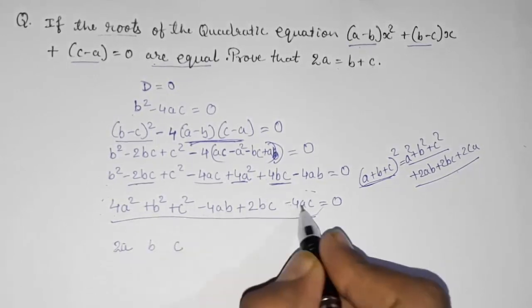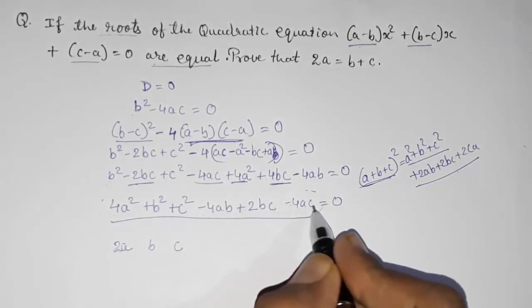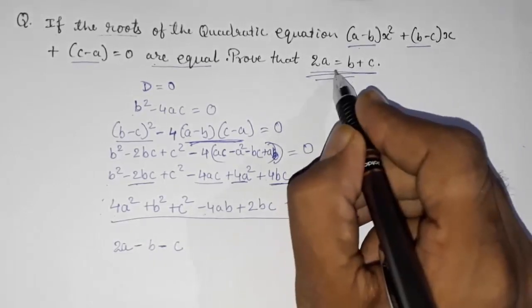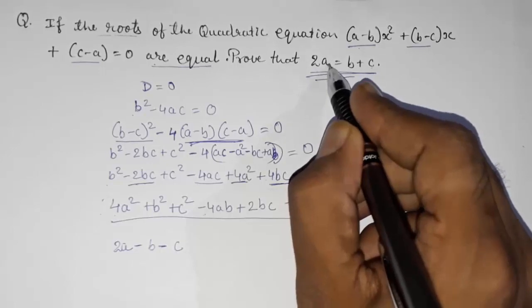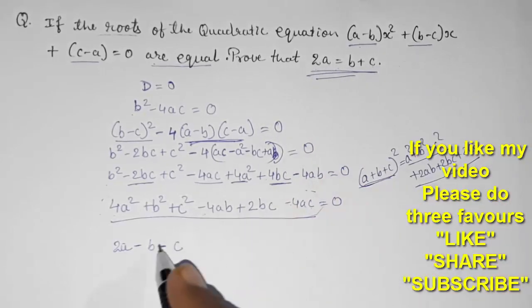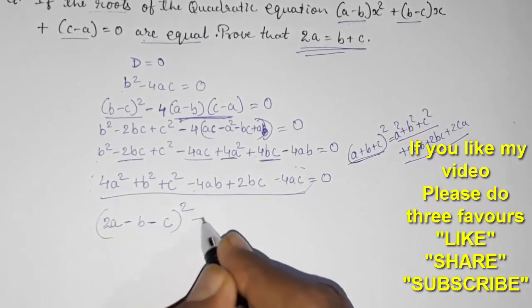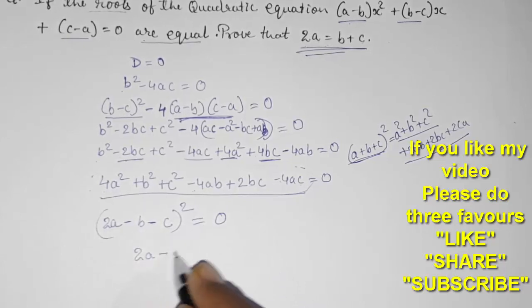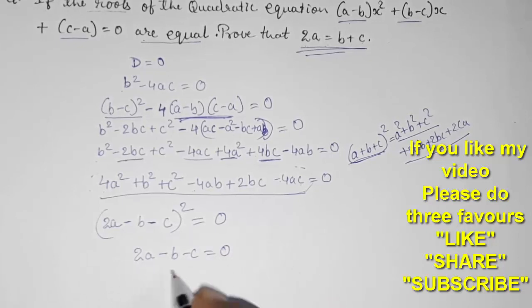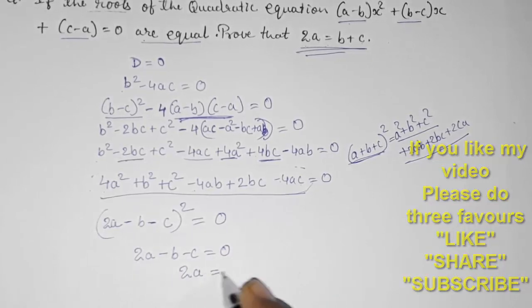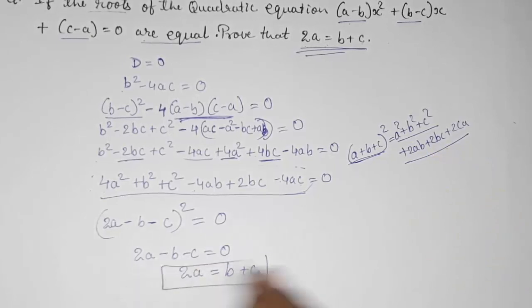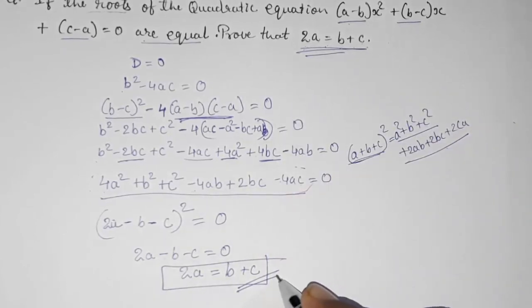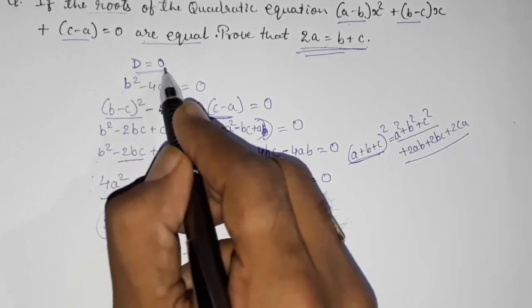Here we have 4a squared, which is the square of 2a. Both b and c have negative signs. So this becomes (2a minus b minus c) whole squared equals 0. Taking square root on both sides: 2a minus b minus c equals 0. Taking b and c to the other side: 2a equals b plus c. Hence proved.